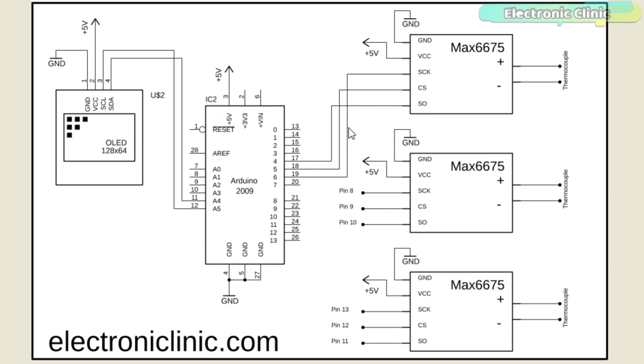As you can see the circuit diagram is very simple. Let's start with the OLED display module. The ground and VCC pins of the OLED display module are connected with your Arduino's ground and 5-volts. The SCL pin of the OLED display module is connected with analog pin A5 and the SDA pin is connected with analog pin A4 of the Arduino. The ground and VCC pins of all the MAX6675 ports are connected with your Arduino's ground and 5-volts.